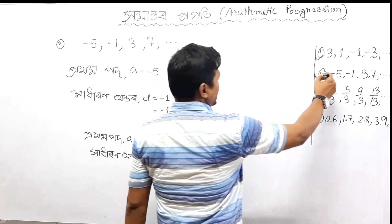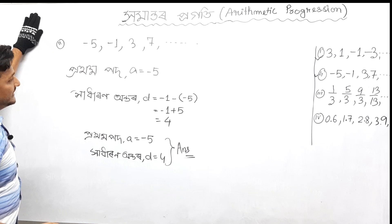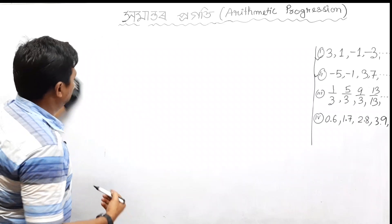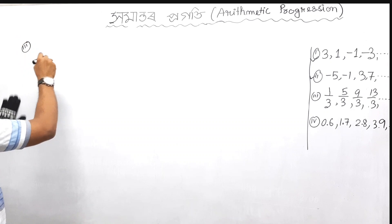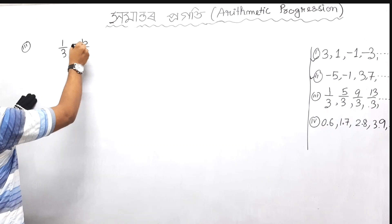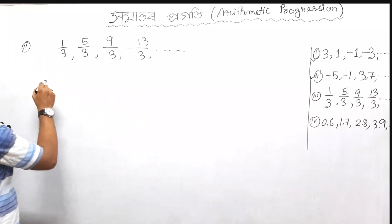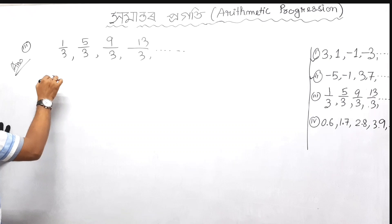D is equal to minus 5. This is the answer — this is marketable. Do you know two? As I said, make a 3. The sequence: 3 number 2, 1 by 3, 5 by 3, 9 by 3, and 13 by 3. This is the first part of the body — you can see it in the first part.